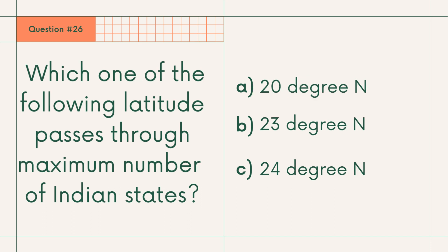Question 26: Which one of the following latitudes passes through the maximum number of Indian states? A. 20 degree north, B. 23 degree north, or C. 24 degree north. Answer: C. 24 degree north.